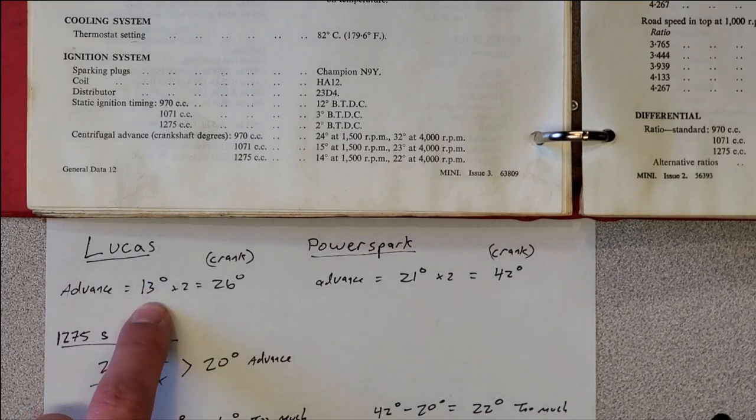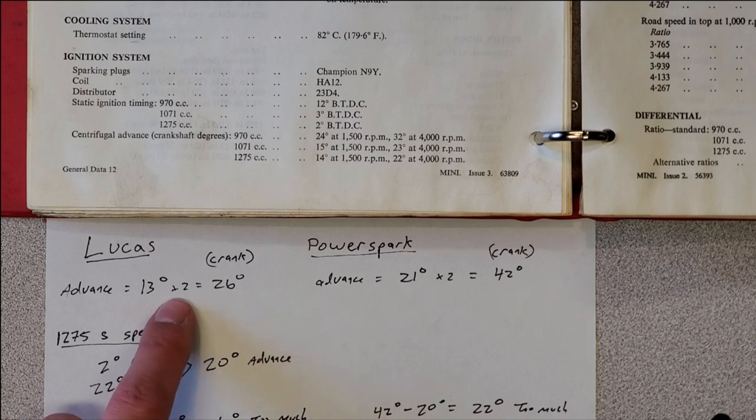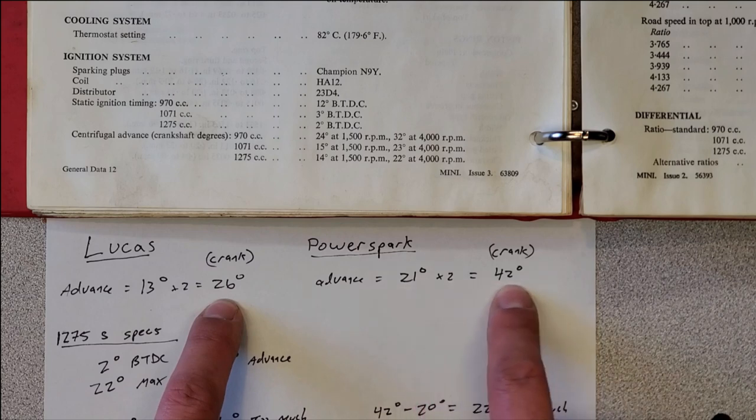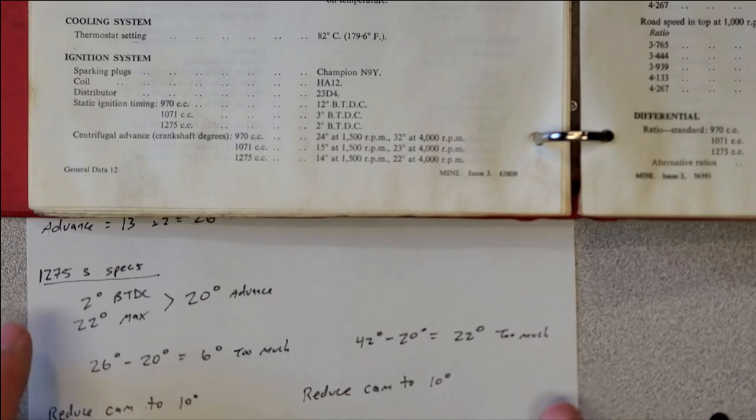The Lucas unit, we measured 13 degrees of advance at the cam. Now, distributor speeds are always half of the crankshaft speed. So we multiply this number by two to get crank speed. So the Lucas gave us 26 degrees. The PowerSpark, despite it being brand new, was designed to give 42 degrees of crank advance.